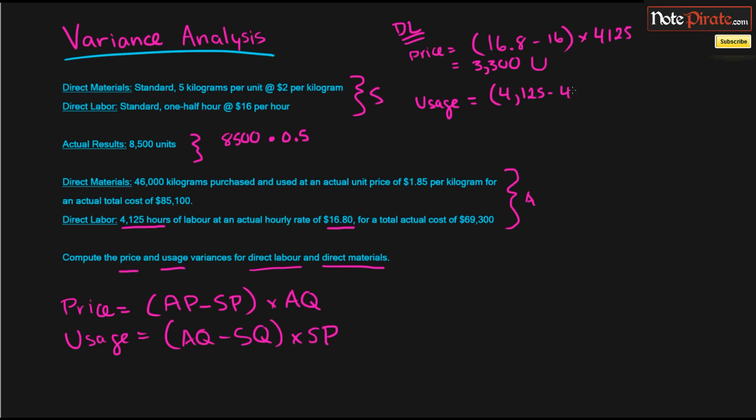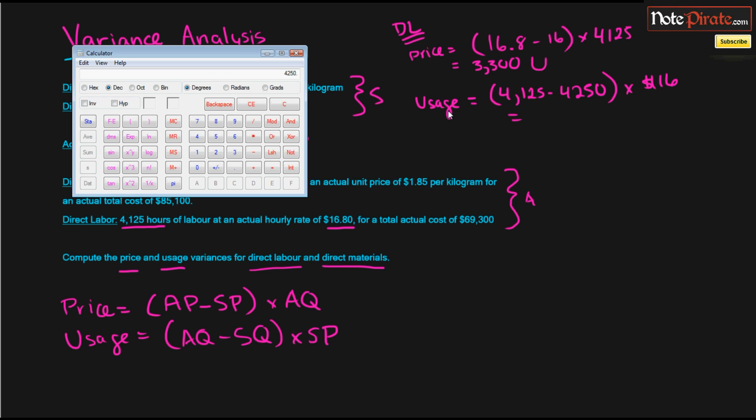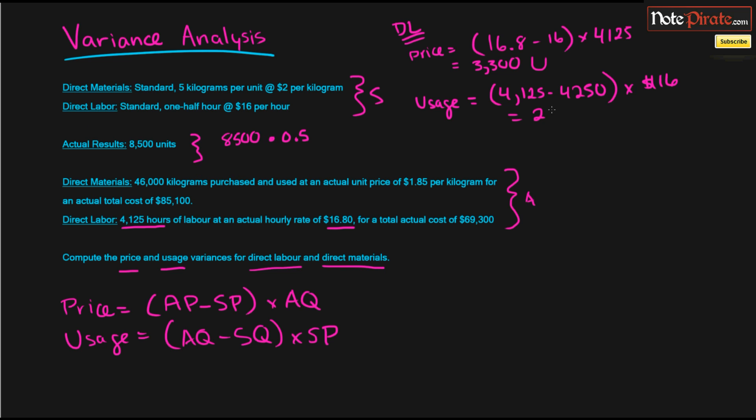Yep. And we just multiply that by the standard price, which is represented by $16. And that's going to give us a difference of $2,000. And this is going to be a favorable difference because our actuals were less than what our budgeted or standard amounts were. So that is the variances for direct labor.